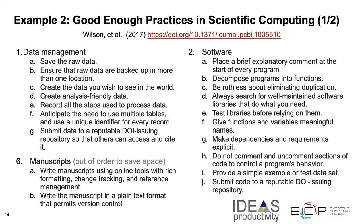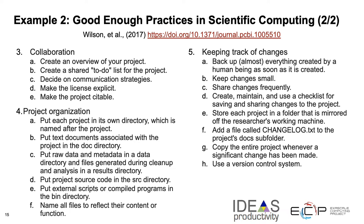Some teams might have problems doing or making all the best practices. So this group of people, most of them the same people, wrote another paper called Good Enough Practices in Scientific Computing. They have points on data management and software. Data management is becoming very important because of being able to reproduce results. They have points on software and then how to write manuscripts. This Good Enough Practices paper also has points on collaboration, project organization, and keeping track of changes.